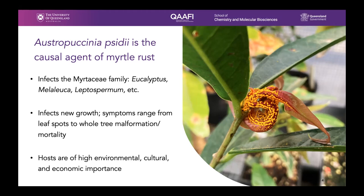The impact of myrtle rust on the Myrtaceae industries is also significant. The lemon myrtle industry is currently experiencing yield losses of up to 70% in untreated plantations. Damage in eucalyptus plantations in Australia is currently minimal, but wide-scale yield losses have occurred overseas, and climate modelling predicts the spread of myrtle rust to new areas containing significant plantations in Australia.